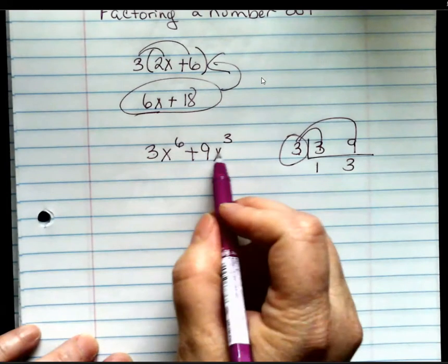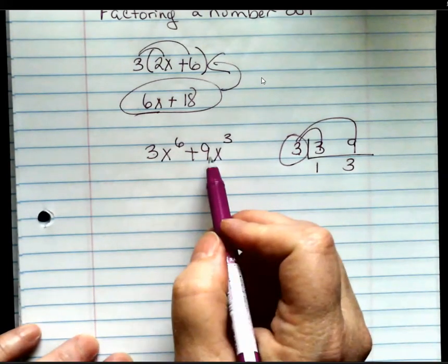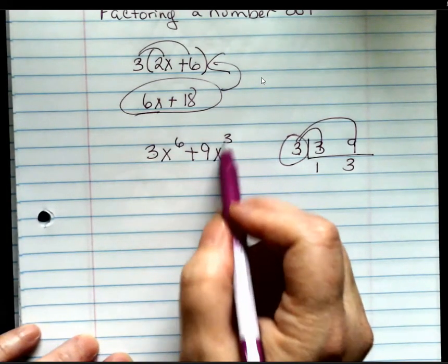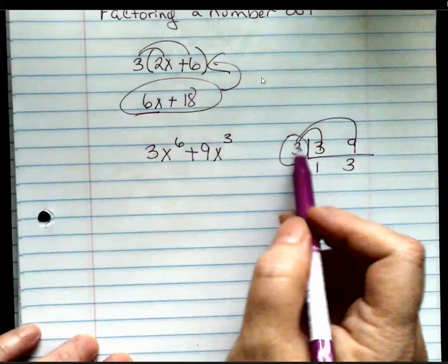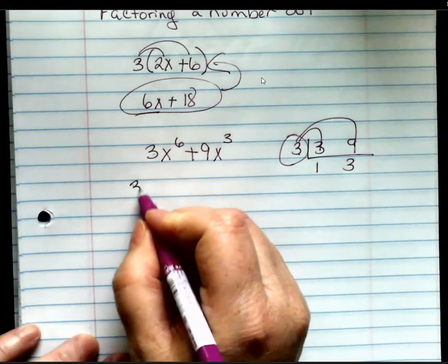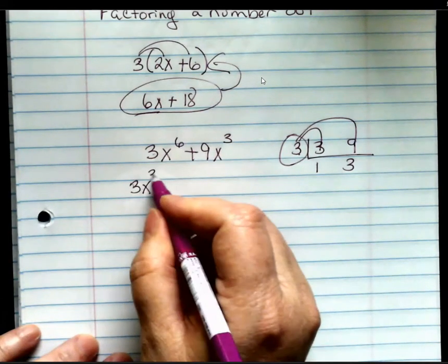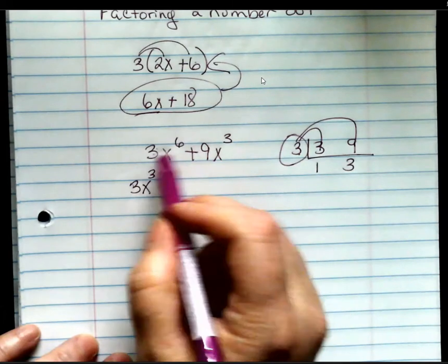I look at my variables, and my smallest variable is x cubed. And now let me show you why that has to be that way. Because you're going to take out a 3x cubed from each one of these.